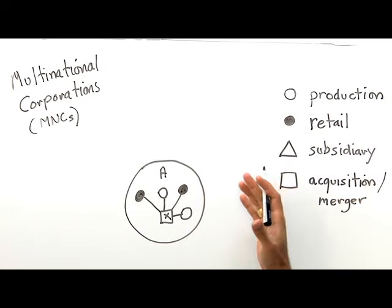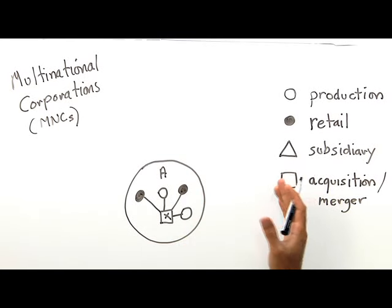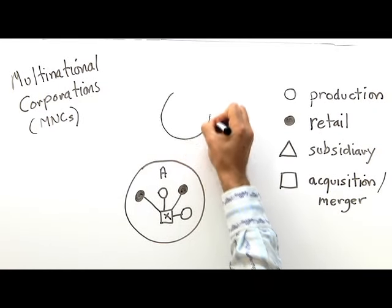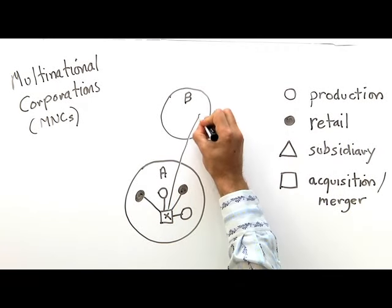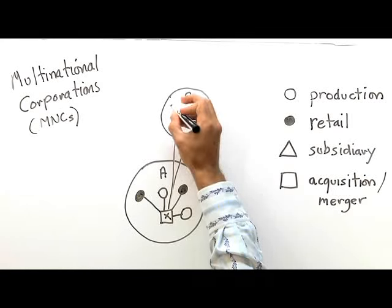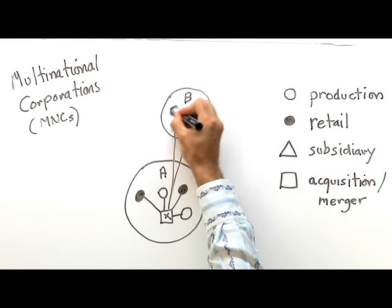But in some cases, companies like to expand their operations abroad, and Company X might wish to do business in State B. And one way it can do that is to open up production facilities in State B, and open retail outlets in State B as well.